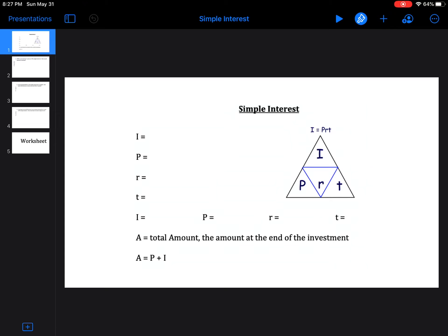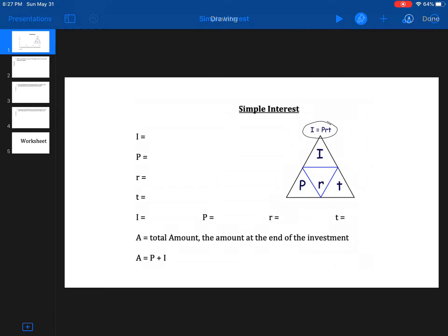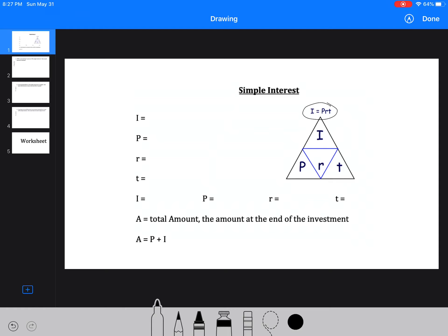So when we're looking at it, the formula that we're looking at is I equals PRT, where I is always our interest, P is our principal, and the principal is the starting value. R is our interest rate, and it's our yearly interest rate.